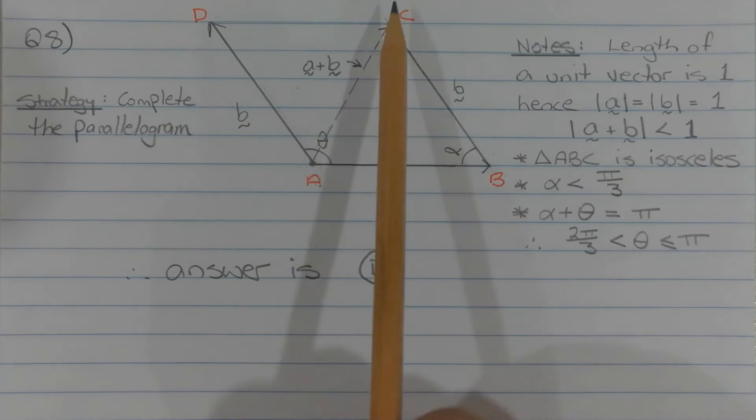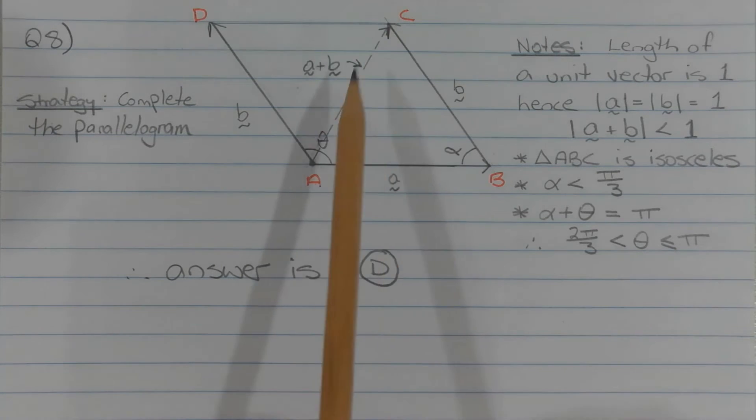Now the short diagonal of this parallelogram, that is diagonal AC, represents the vector sum of A and B.